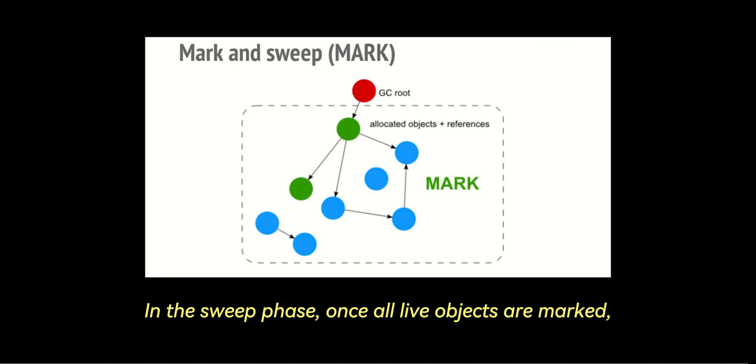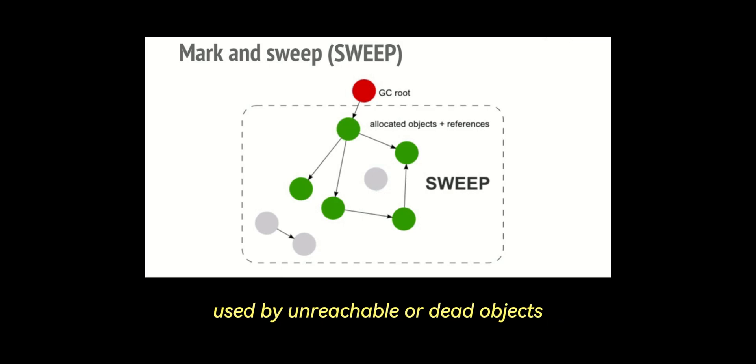In the sweep phase, once all live objects are marked, the garbage collector clears out memory used by unreachable or dead objects, freeing up memory for future allocations.